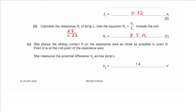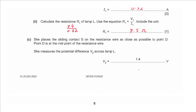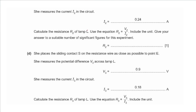Part C says she places the sliding contact at point D, the midpoint of the resistance wire. V2 = 1.4 V and I2 = 0.24 A. Calculate R2 = V2 / I2: 1.4 divided by 0.24 gives 5.83 recurring, which we approximate to 5.8 ohms.